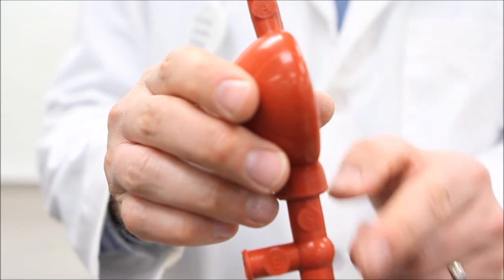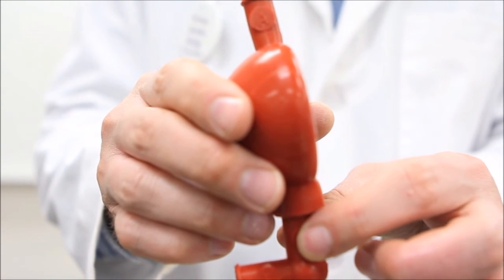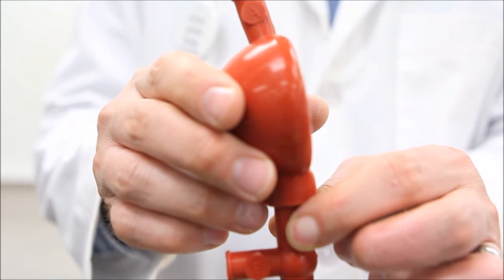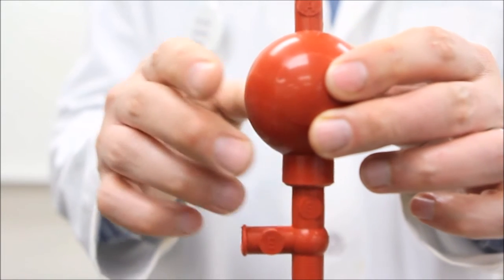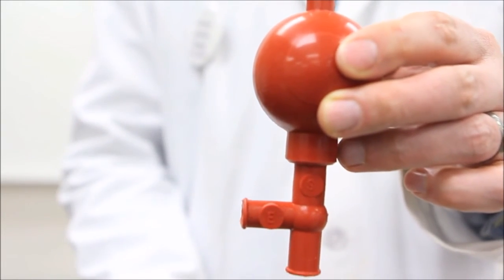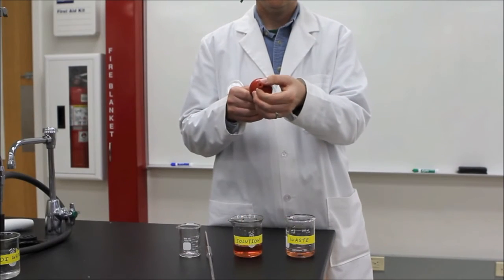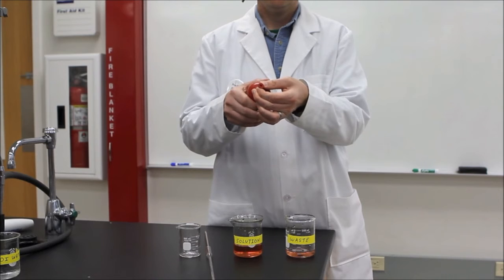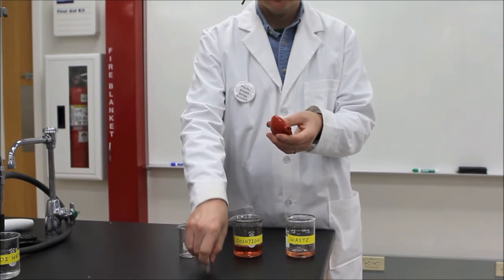Pinching the S valve provides suction of the liquid into the pipette and consequently reinflates the bulb. Pinching the E valve empties the liquid out of the pipette in a controlled fashion. First, pinch the A valve while simultaneously squeezing the bulb. After the bulb is fully squeezed, release the A valve and affix the bulb to the mouth of the pipette.